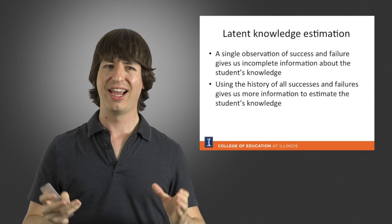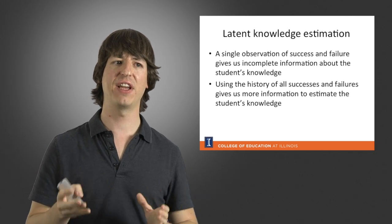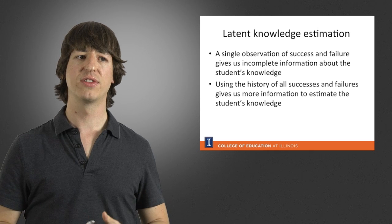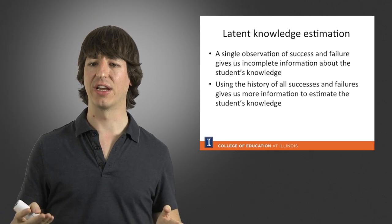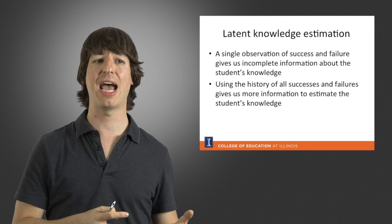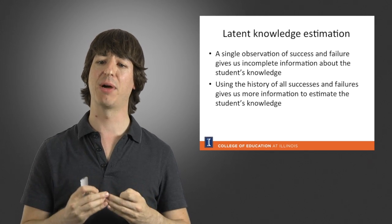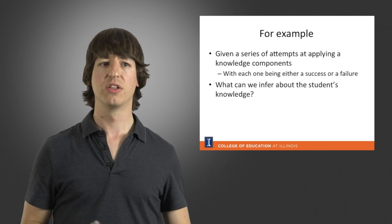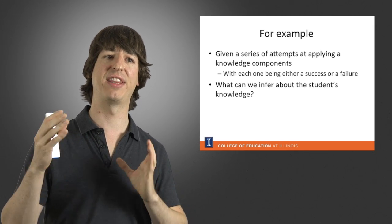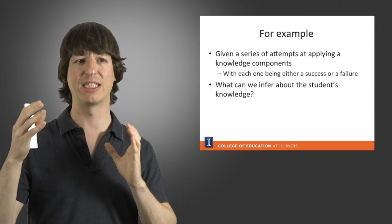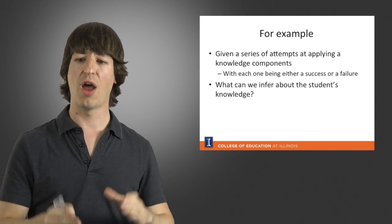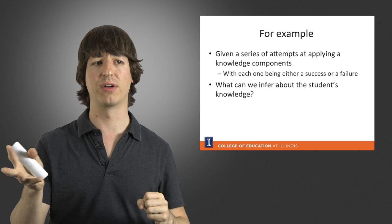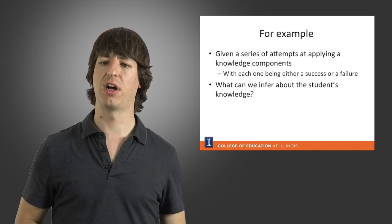Because of that, a single observation of success or failure gives us incomplete information about the student's knowledge. What we can do instead is use the history of all successes and failures to give us more information about whether the student knows something. So if we're given a series of attempts at applying a specific knowledge component, with each attempt being either a success or a failure, then we can infer more about the student's knowledge.